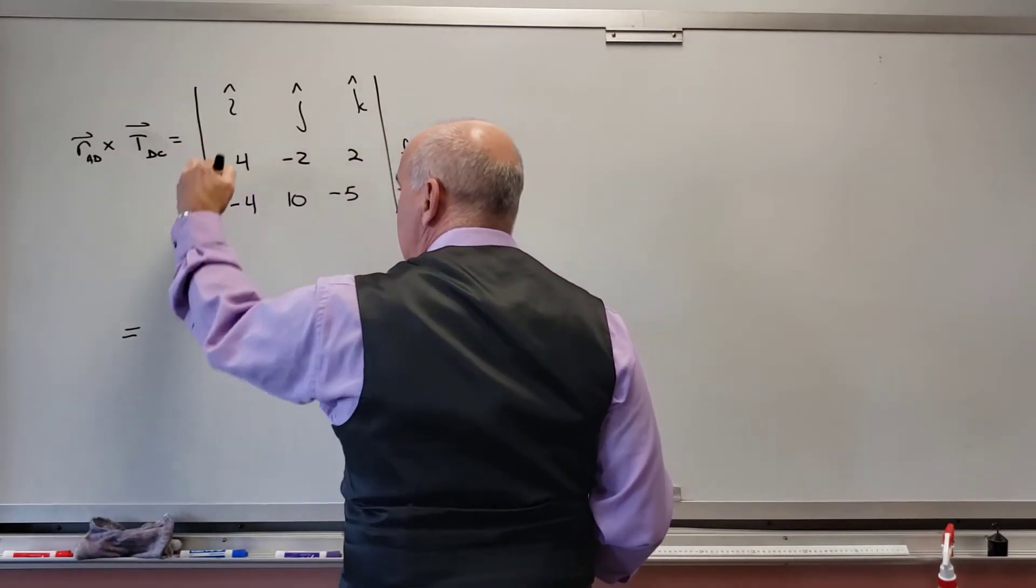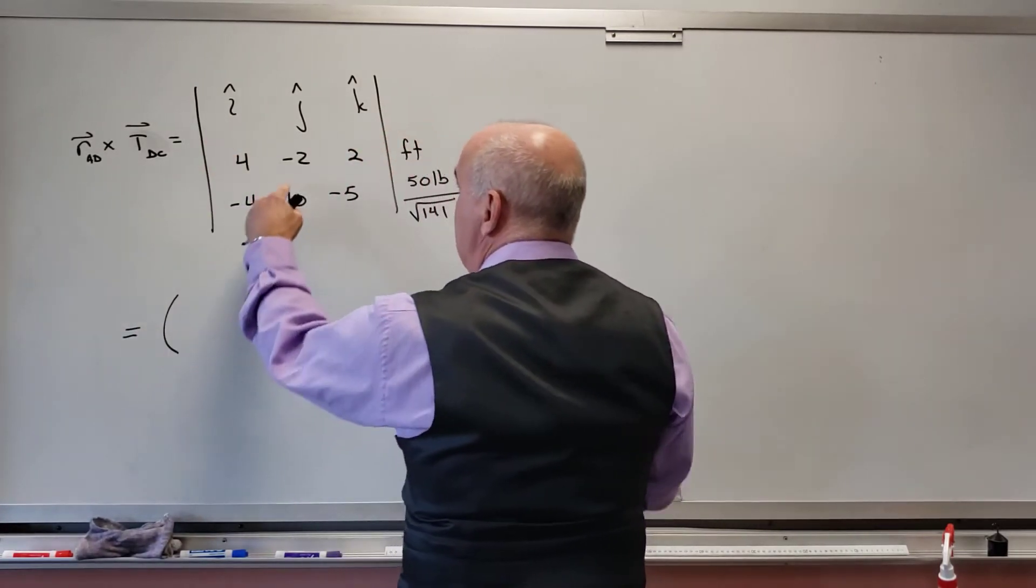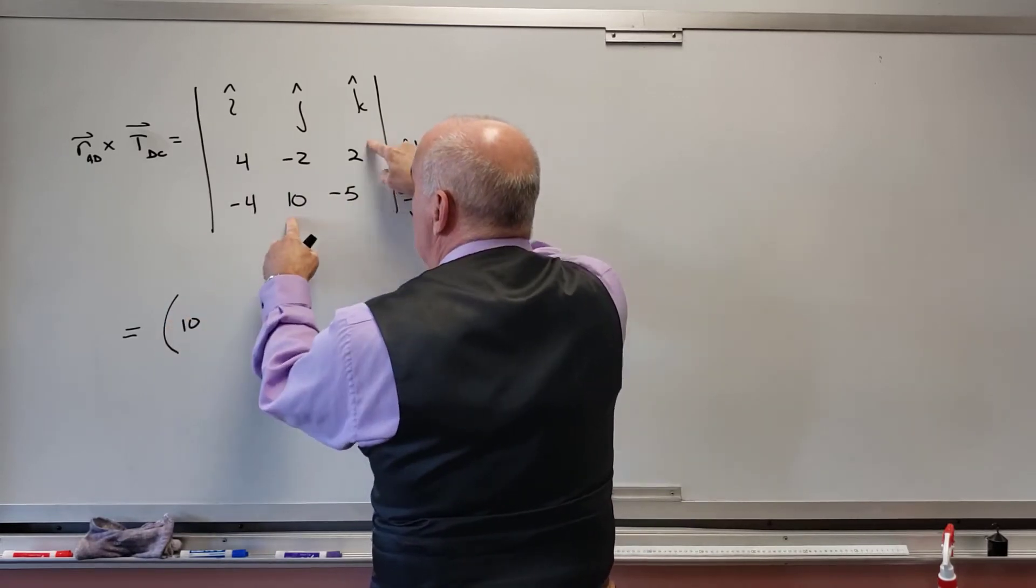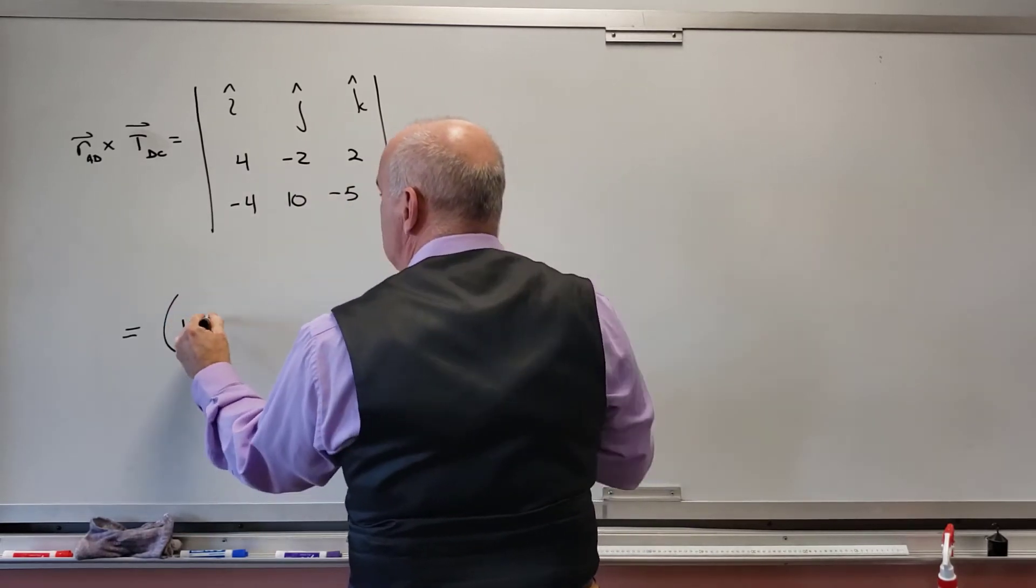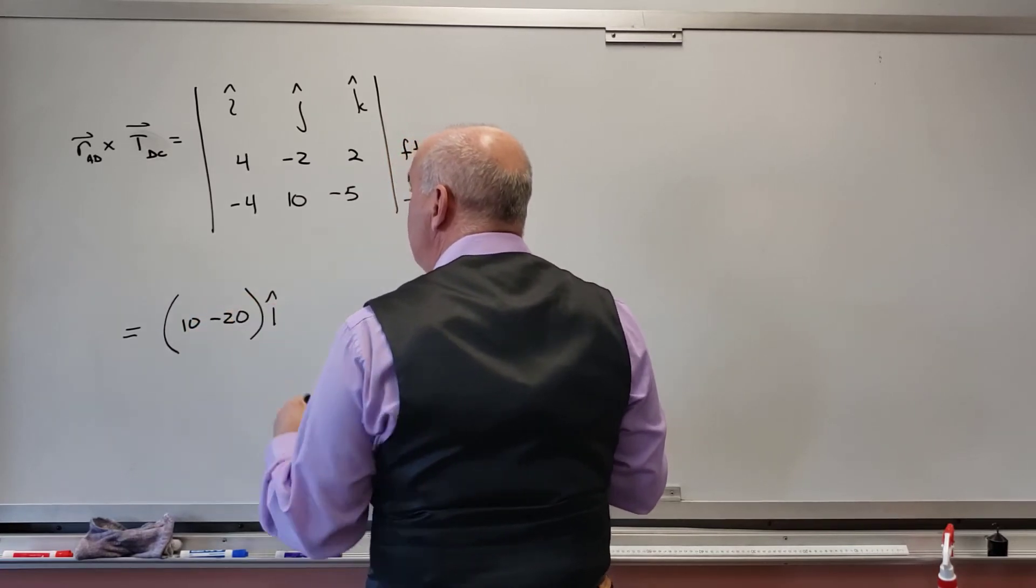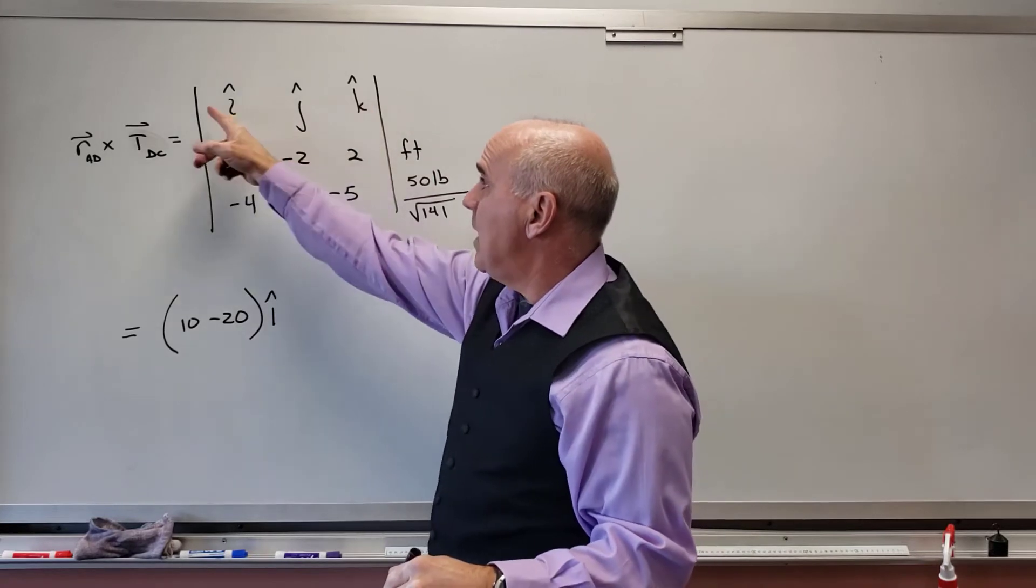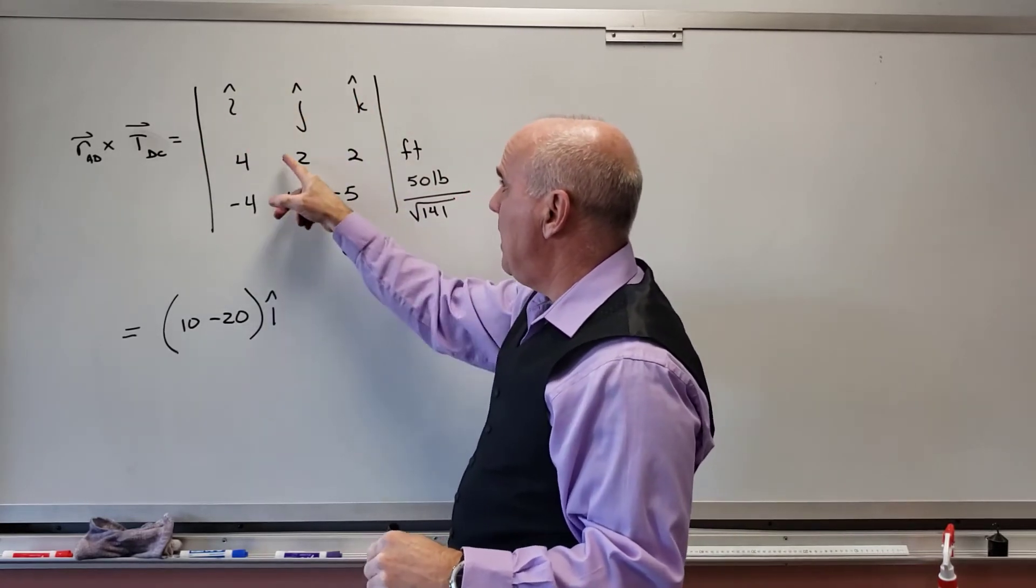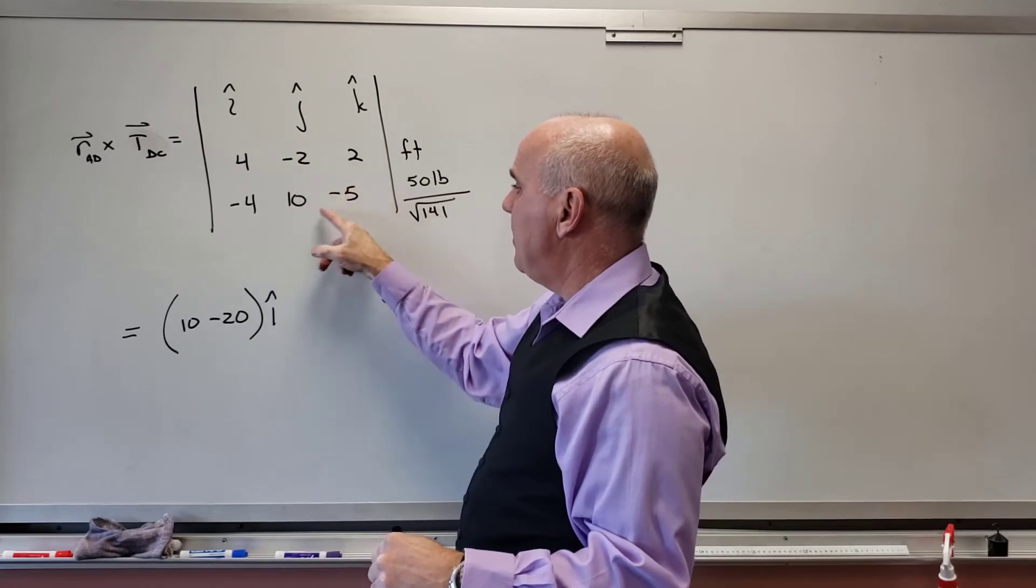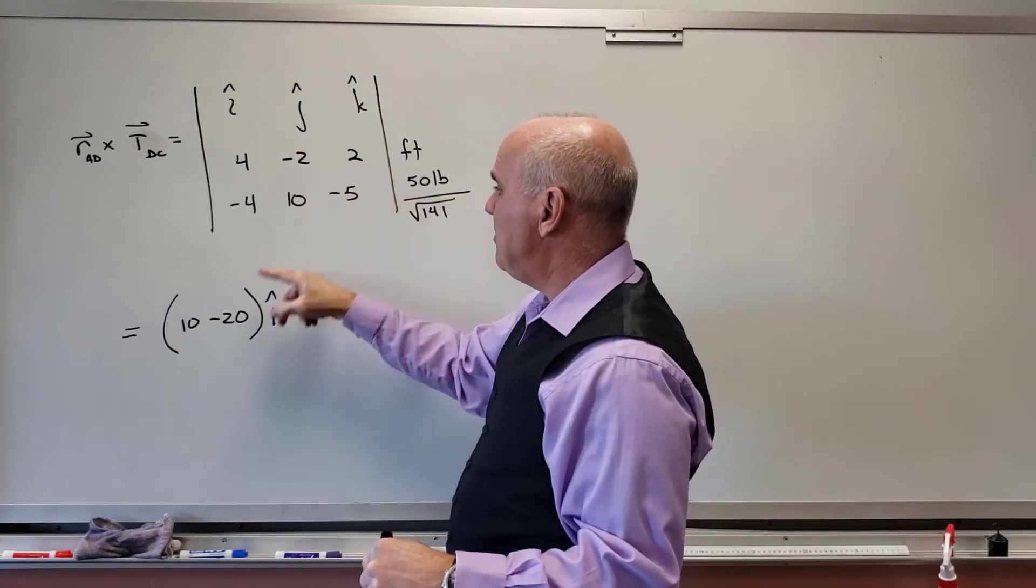So here's what I get. I get i hat and then I'm going to take -2 times -5, that's 10, minus 10 times 2, which is 20. And that's i hat. So cross out the row and the column with the i, and I'm just left with this part right here. So -2 times -5, that's 10. 2 times 10 is 20.